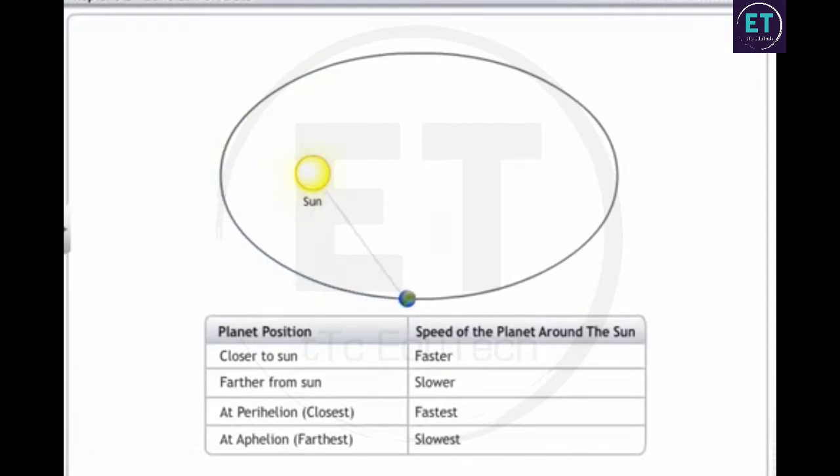Further, according to Kepler, the speeds of planets in their orbits vary through the revolution around the sun. When planets get closer to the sun, they move faster. Conversely, as they get farther from the sun, they move at relatively lower speeds.